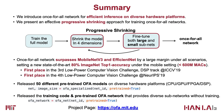To summarize, we introduced the Once-for-All network to efficiently design efficient models for diverse hardware platforms. We present an effective progressive shrinking algorithm for training Once-for-All networks. Our models surpass MobileNetV3 and EfficientNet by a large margin across a wide spectrum of hardware platforms, setting a new state-of-the-art 80% top-1 accuracy under the mobile setting on ImageNet. Using Once-for-All, we won recent low-power computer vision challenges at ICCV and NeurIPS. Our training code and pre-trained models have been released on GitHub. Thank you.